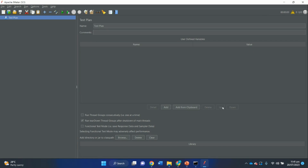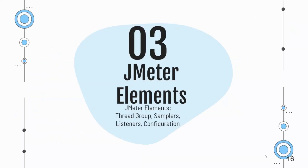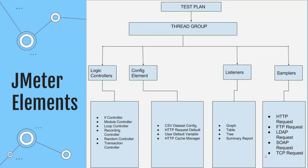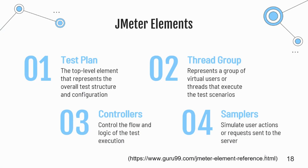We have successfully installed the Java Development Kit and JMeter on Windows. Before creating and running a test plan, we need to understand the basic elements of Apache JMeter. The first element is the test plan — the top-level element in JMeter. It acts as a container for all other elements and sets the overall structure and settings for your test. You can define properties, specify test duration, enable or disable elements, and set other configurations within the test plan.